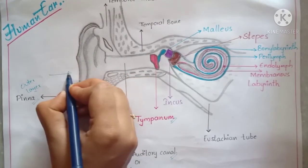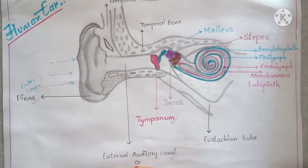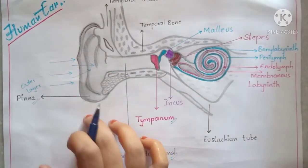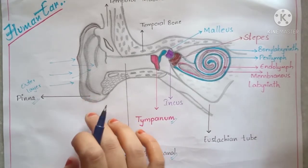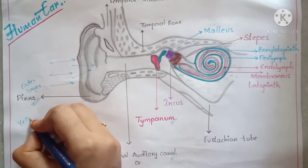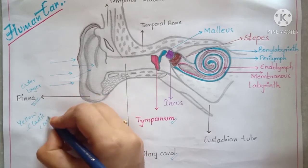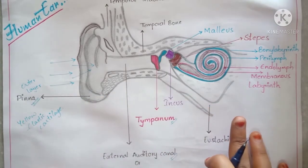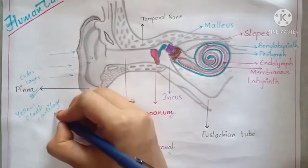Sound waves from the atmosphere are passed into our ear with the help of the pinna. The touchable part of our ear is called the pinna, and it is made up of yellow elastic cartilage. There are basically three types of cartilage: yellow elastic cartilage, white fibrous cartilage, and hyaline cartilage. Pinna is made up of yellow elastic cartilage.